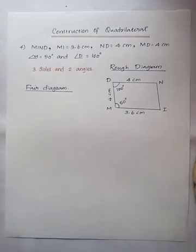Hi students, this is the fourth model of construction of quadrilateral. The fourth model is three sides and two angles are given. The question is quadrilateral MIND: MI is equal to 3.6 centimeter, ND is equal to 4 centimeter, MD is equal to 4 centimeter, and angle M is equal to 50 degrees and angle D is equal to 100 degrees.